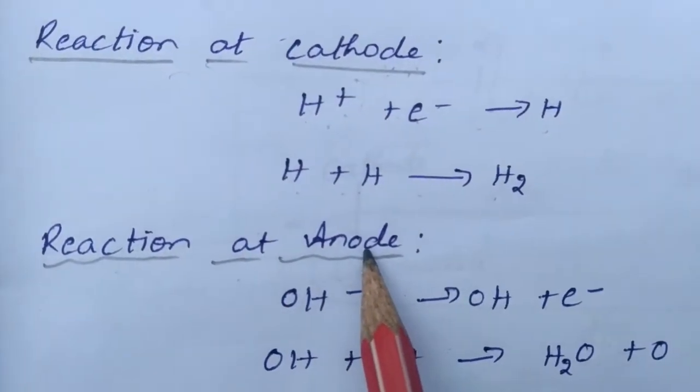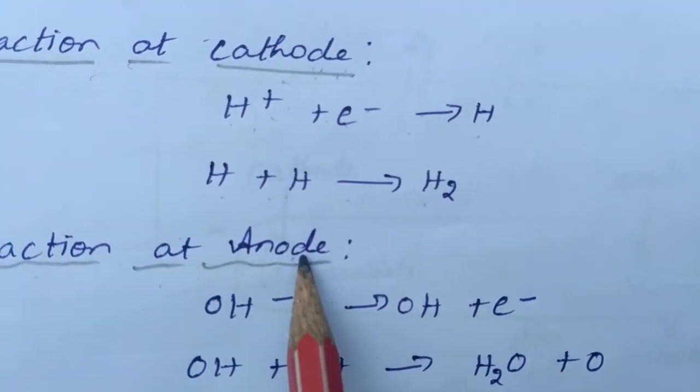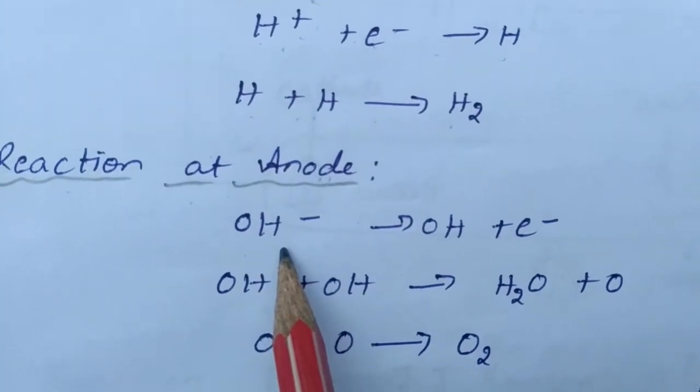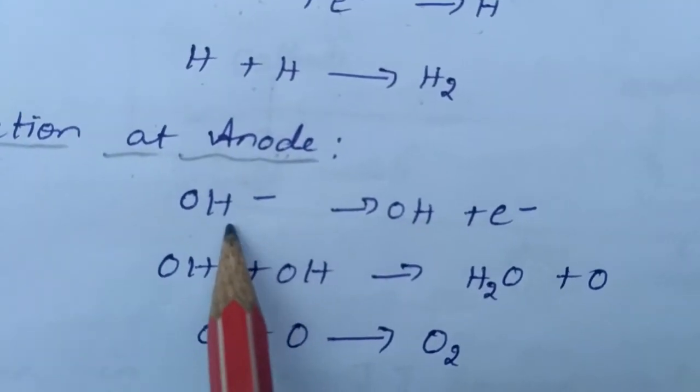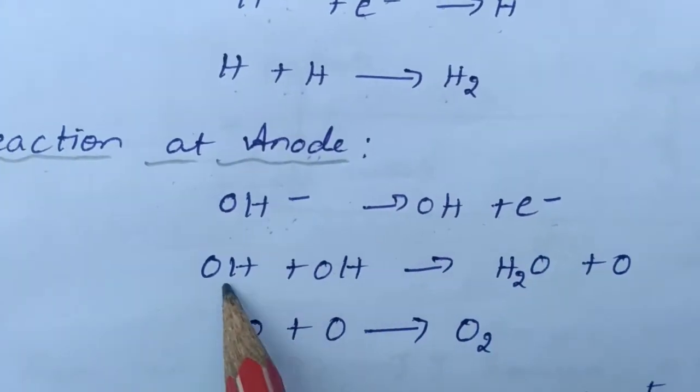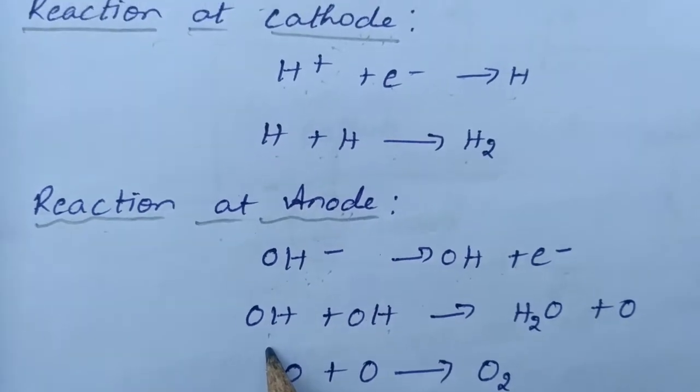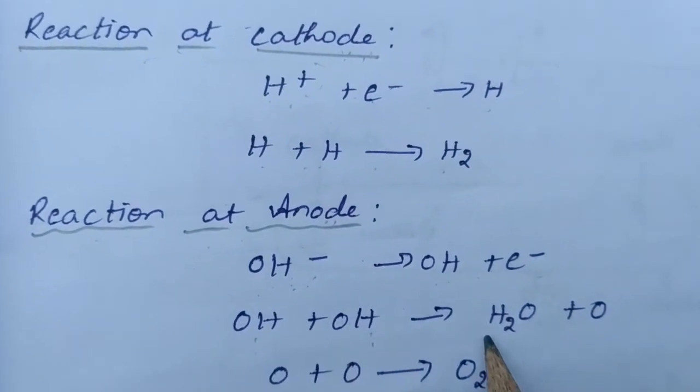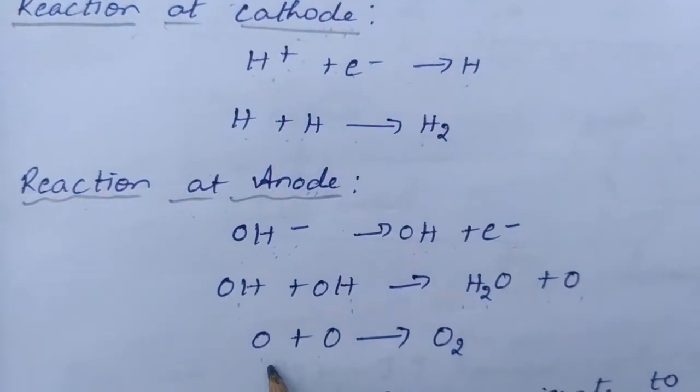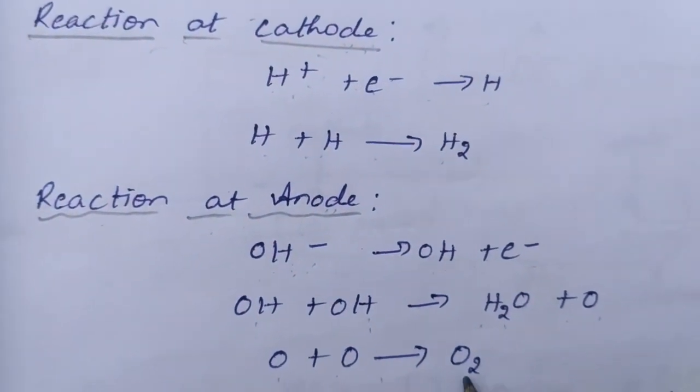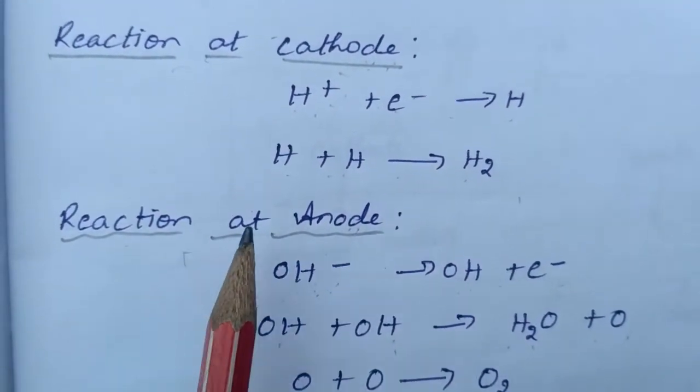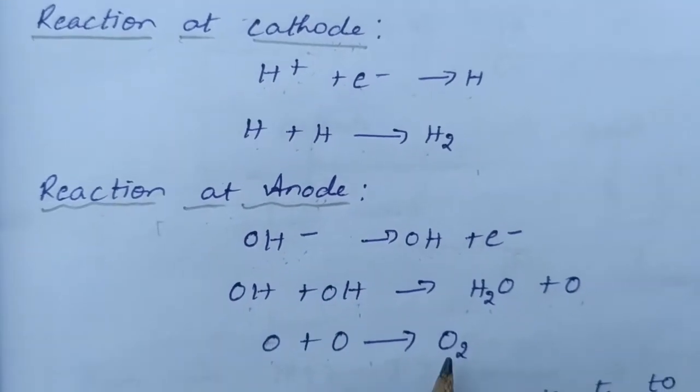Reaction at anode: This is the positive electrode. The negative ions will migrate toward the anode. OH- loses one electron and forms OH plus one electron. Two OH hydroxides combine and give rise to one water molecule and one oxygen atom. Two oxygen atoms combine and form oxygen. The product formed at cathode is hydrogen, and at anode is oxygen.